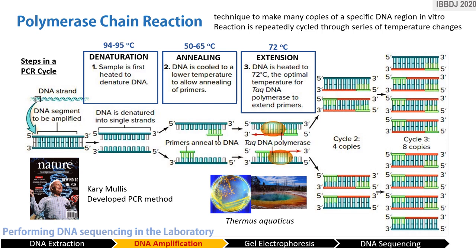After DNA is extracted, the DNA segment needs to be amplified. Polymerase chain reaction, or PCR, is a technique used in the lab to make millions of copies of a particular section of DNA. It was first developed in the 1980s by Nobel Prize awardee Kary Mullis. PCR can amplify samples that contain tiny amounts of DNA, and it is used in laboratories all over the world. It can copy DNA from even a single hair follicle or a drop of blood left at a crime scene.